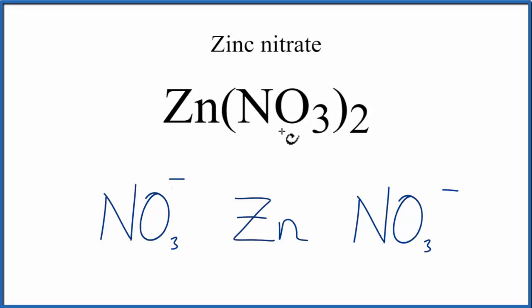We also can look up nitrate, the NO3, on a polyatomic ion table, and see that it has a negative charge. So since we have two of these negatives, we know that zinc is going to be a 2-plus.